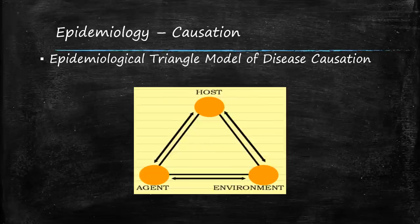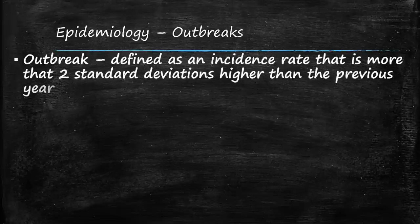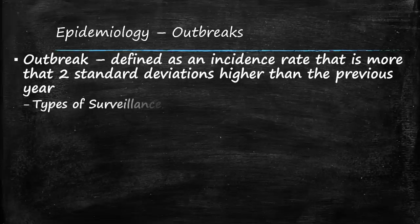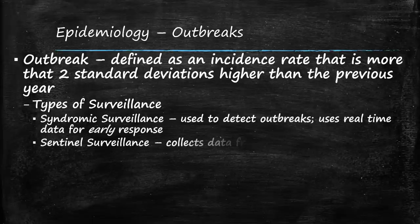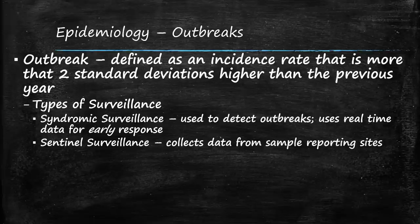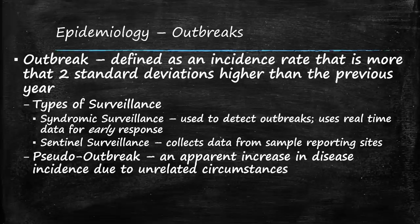An outbreak is defined as an incidence rate more than two standard deviations higher than the previous year or time period. Different types of surveillance are used: syndromic surveillance uses real-time data for early outbreak detection, and sentinel surveillance collects data from sample reporting sites. A pseudo-outbreak is an apparent increase in disease incidence due to unrelated circumstances — so not every reported outbreak is a true outbreak.